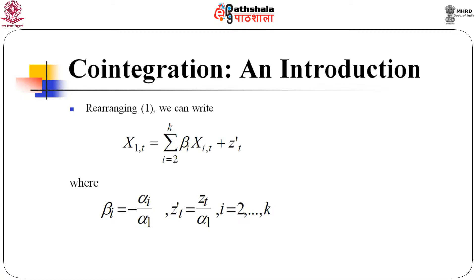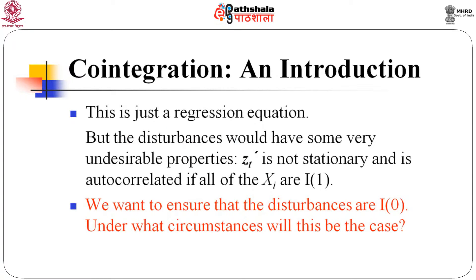Rearranging, we can get x_{1t} as a sum of coefficients of all integrated-of-order series x_i and accordingly define the coefficients and the term. This is just a regression, but the disturbance term of this equation has very undesirable properties: z_t prime is not stationary and is autocorrelated if all the x_t's are I(1). So we want to ensure that the disturbances are I(0), and this gives an idea of co-integration.